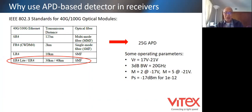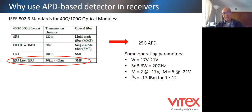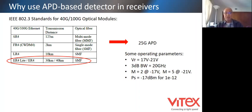I grabbed some parameters from a pretty recent paper about 25G APD. You can see typical parameters: the reverse bias voltage is roughly 17 to 21 volts, the 3 dB bandwidth is roughly 20 gigahertz, the multiplication factor M is roughly 2 at 17 volts and 5 at minus 21 volts. It can achieve sensitivity like minus 17 dBm at 10 to the minus 12. Very typical.